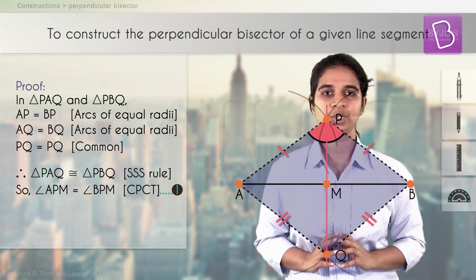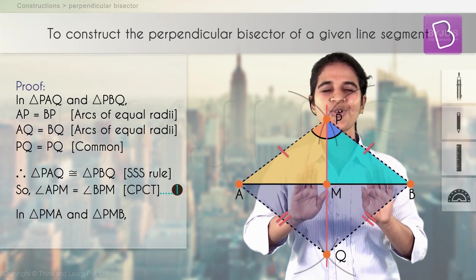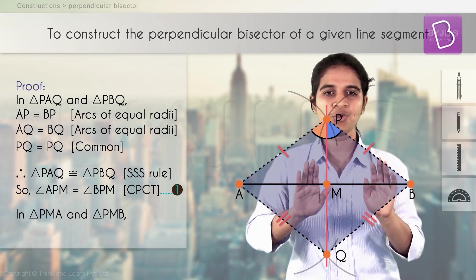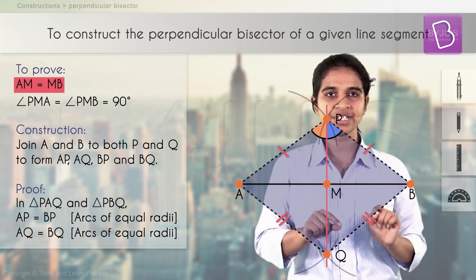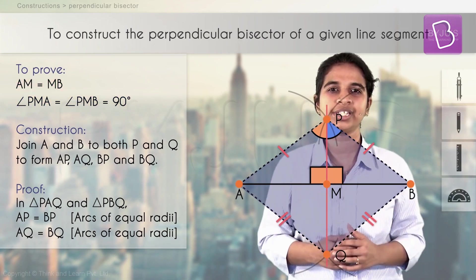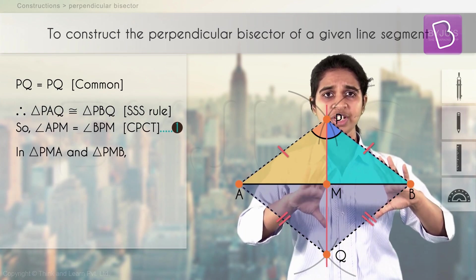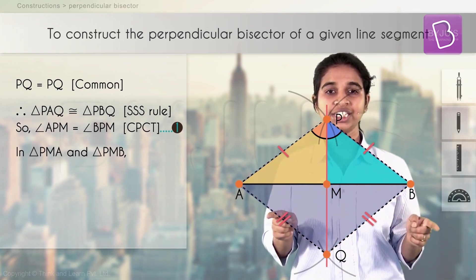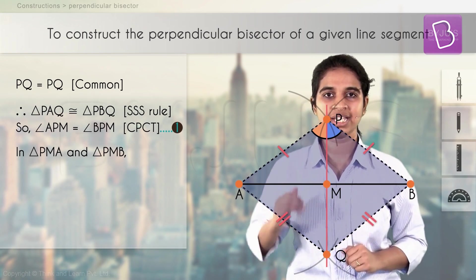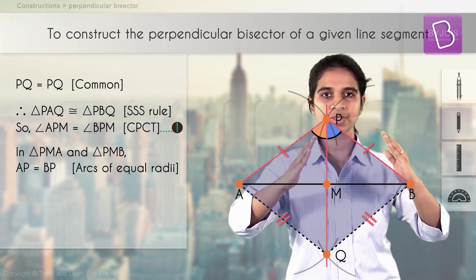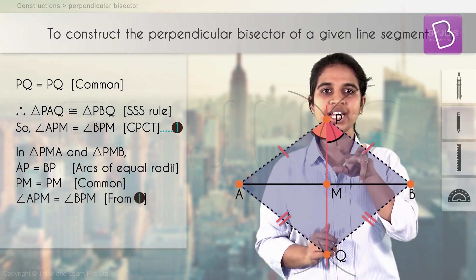Now let's look at two different, smaller triangles — these are the more important ones because everything we want to prove is marked on them. We need to prove AM equals MB, and that the angles are 90 degrees. Are these two triangles congruent? Yes — this time by SAS test. This side equals this side (same compass length), PQ is a common side, and the angle we just proved is equal — so we have SAS.